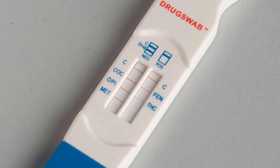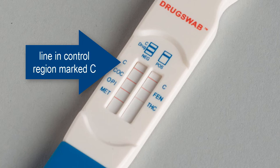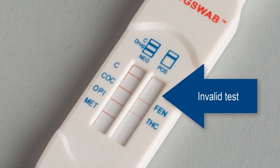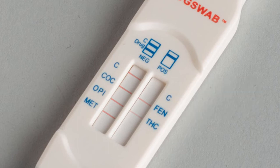Interpreting test results is easy. First, ensure that the test is performing properly by looking for the presence of a red colored control line on each strip in the control region marked C. If no red line appears next to either C, the test is invalid and should be discarded, and the operator should perform another test using a new test kit.